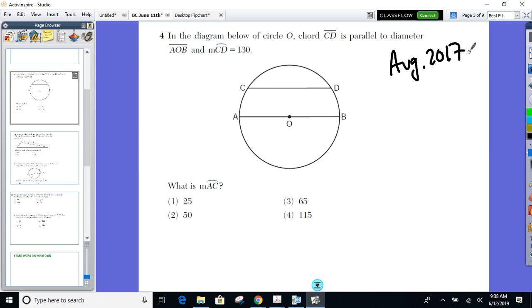Here we go. August 2017. We are told that these two chords are parallel. Arc CD measures 130°, and we're looking for arc AC right here.